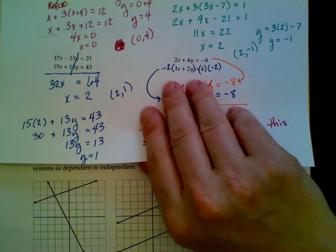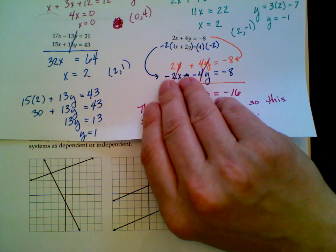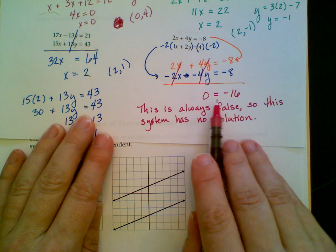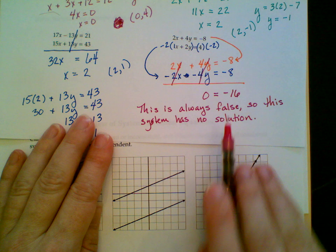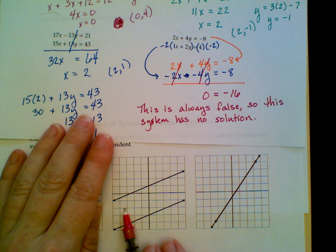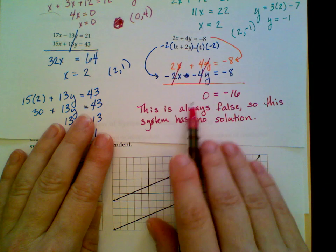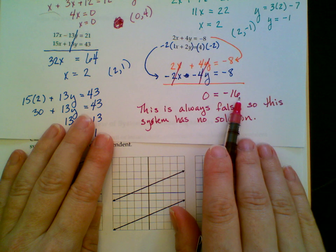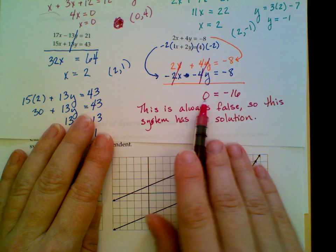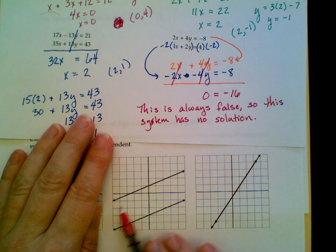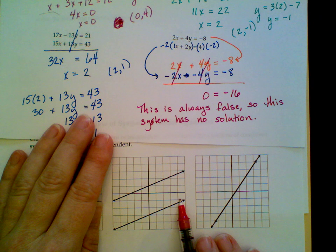So, we can look at both at the same time. So, this system, because this is always false, I was looking for one coordinate of my intersection point. Since I got something that's always false, there is no intersection point. So, there's no solution. So, I have an inconsistent system.